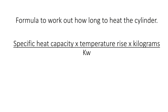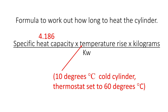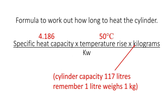Here is the formula. The specific heat capacity for water is always 4.186. The temperature rise: the thermostat is set to 60 degrees and the cylinder's water when cold is 10 degrees, so it's got to rise by 50 degrees. The storage is 117 litres, which we know weighs 117 kilograms.